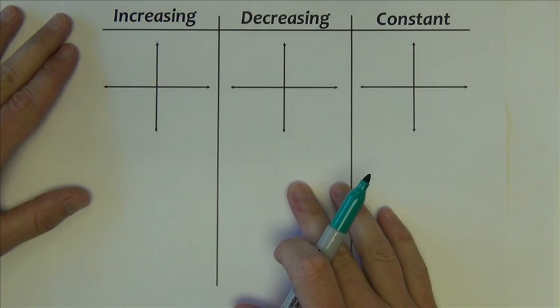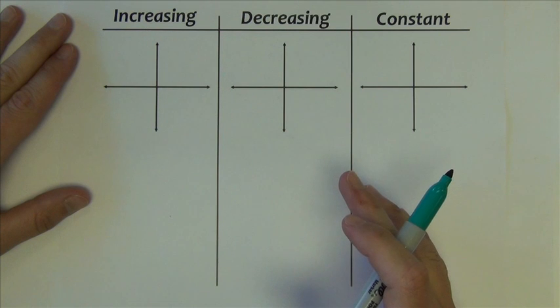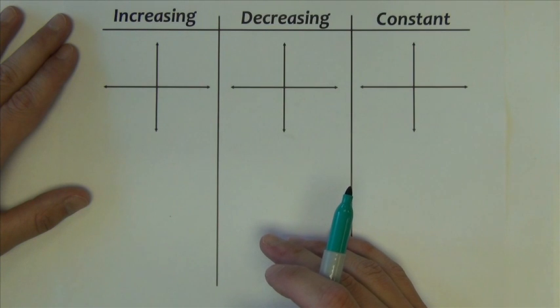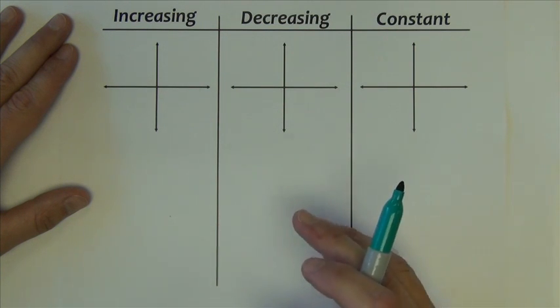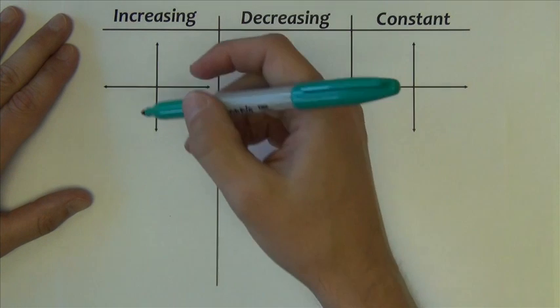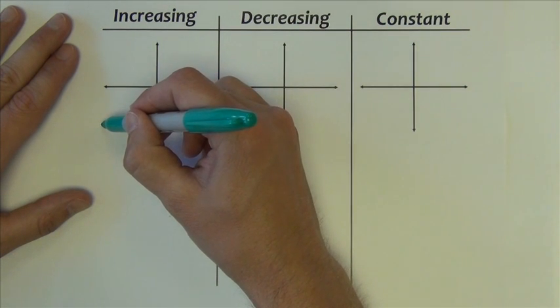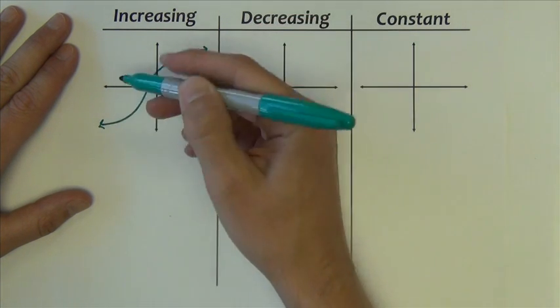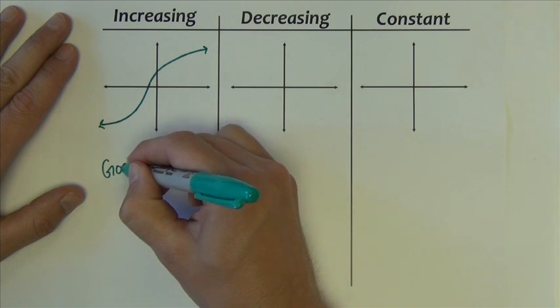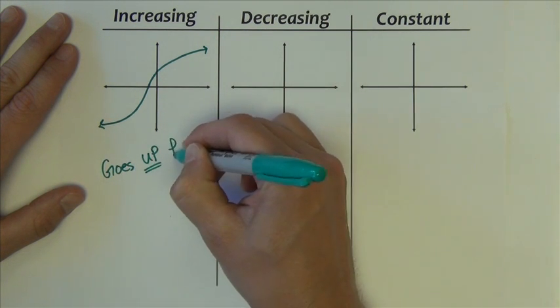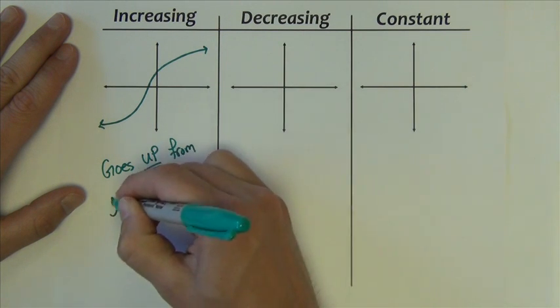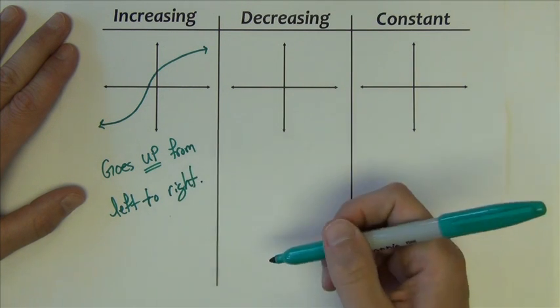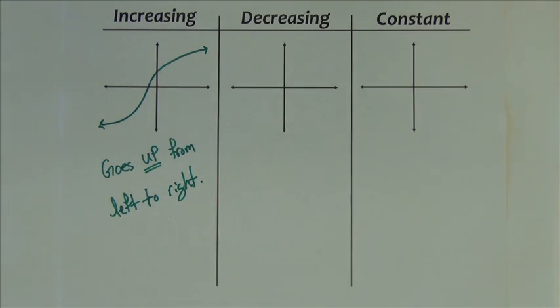Here, the next property of functions I'd like to look at is increasing, decreasing, constant behavior. Again, it's something that can be very easily described or looked at visually with the graph. An increasing function might look like this. Notice that the graph goes up from left to right, going up, meaning that it is increasing.